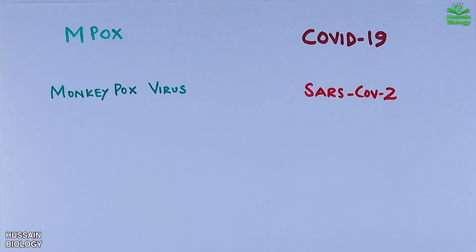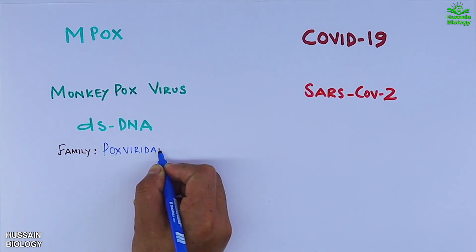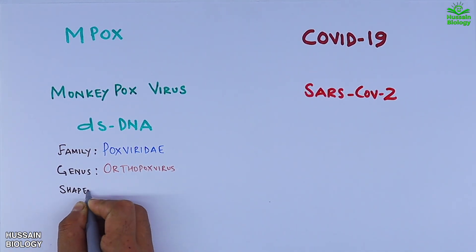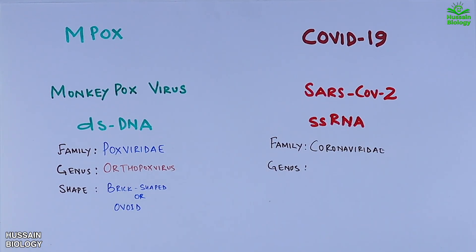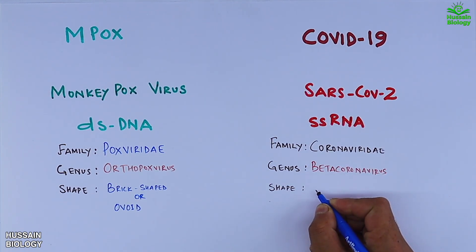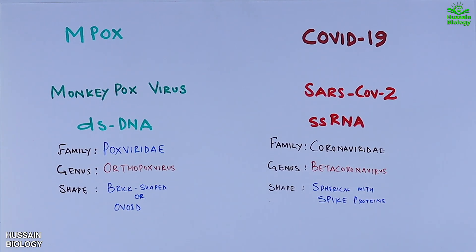Both mpox and COVID-19 have been prominent in recent health news, but they come from different virus families and have distinct characteristics. Mpox is caused by the monkeypox virus, a double-stranded DNA virus from the Poxviridae family and the Orthopoxvirus genus — it has a brick-like shape. COVID-19 is caused by SARS-CoV-2, a single-stranded RNA virus belonging to the Coronaviridae family and the Betacoronavirus genus, with a spherical shape covered with spike proteins.